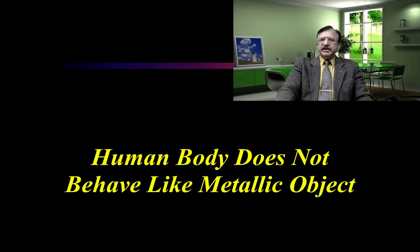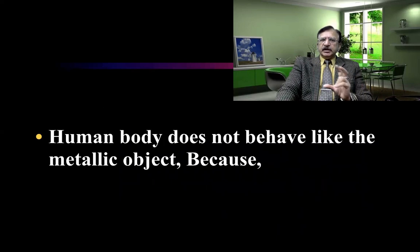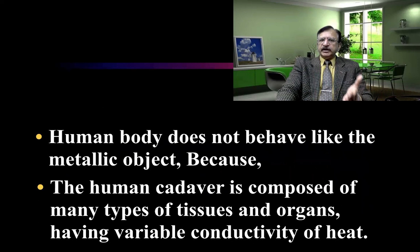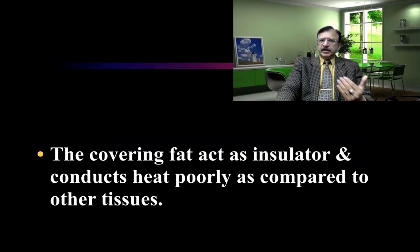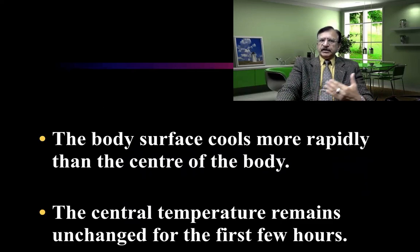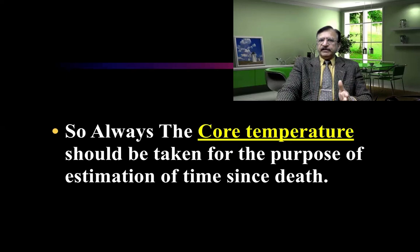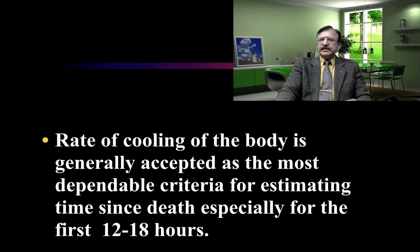The human body does not behave like a metallic object because the human cadaver is composed of many types of tissues and organs having variable conductivity of heat. The covering of fat acts as insulation and conducts heat poorly compared to other tissues. The body surface cools more rapidly than the core, and the central temperature remains unchanged for the first few hours. Core temperature should always be taken for estimation of time since death, as the rate of body cooling is the most dependable criterion for this, especially for the first 12 to 18 hours.